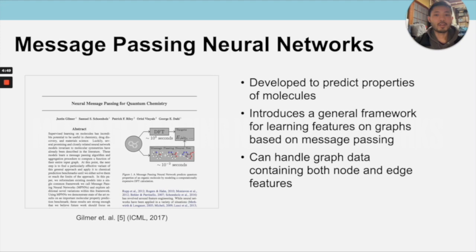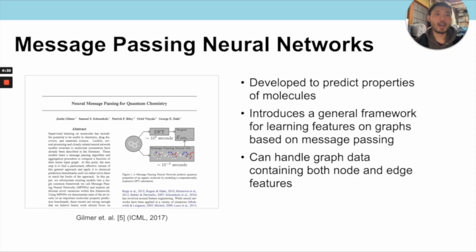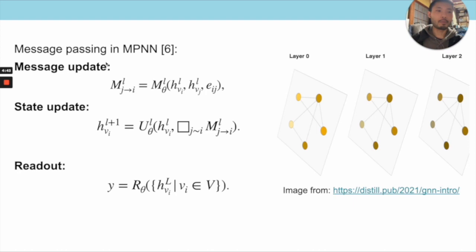Message-passing neural networks, originally proposed in an ICML paper by Justin Gilmer and others for predicting quantum properties of molecules, have since gained widespread traction as a general framework for learning features on graphs, handling both node and edge features. This architecture is structurally similar to belief propagation, consisting of a message-update step that aggregates information from all neighbors to be sent to a node, a state-update step that aggregates incoming messages, and an additional readout step mapping the final hidden layer to the output.